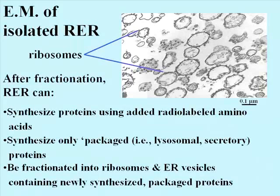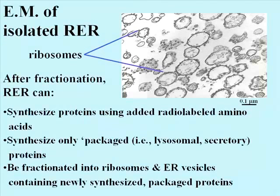Specifically, these structures in the test tube should be able to synthesize radioactive proteins using radioactive amino acids. They should contain proteins found in Golgi vesicles, lysosomes, or perhaps cellular secretions, but not proteins found in the cytoplasm, or associated with other organelles like mitochondria, chloroplasts, or nuclei. In fact, isolates like these meet these criteria and are clearly RER.